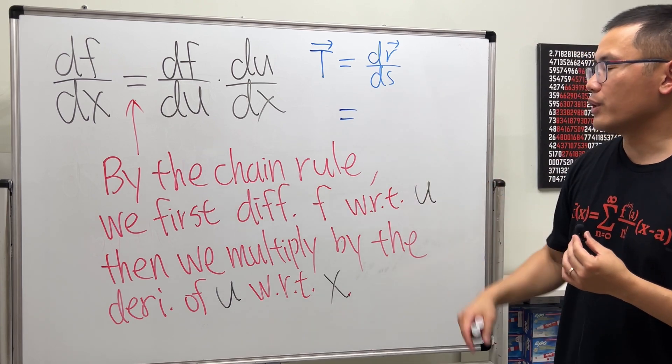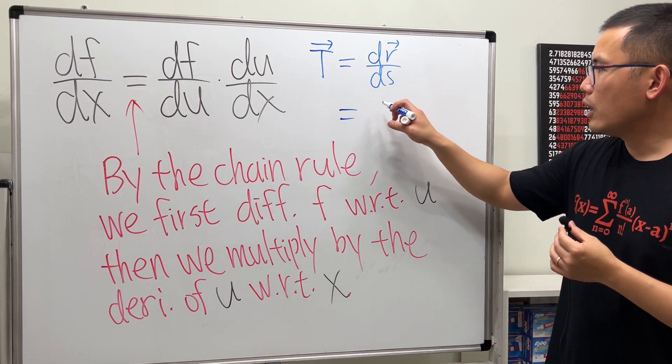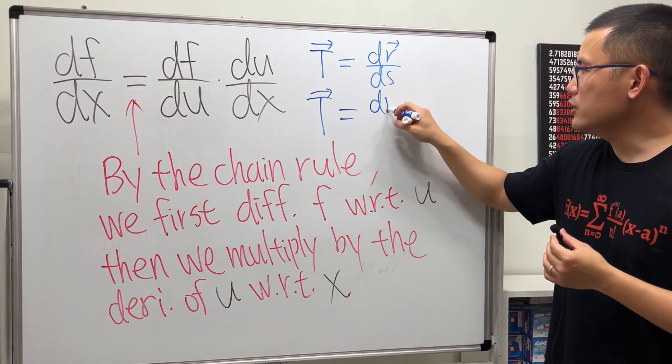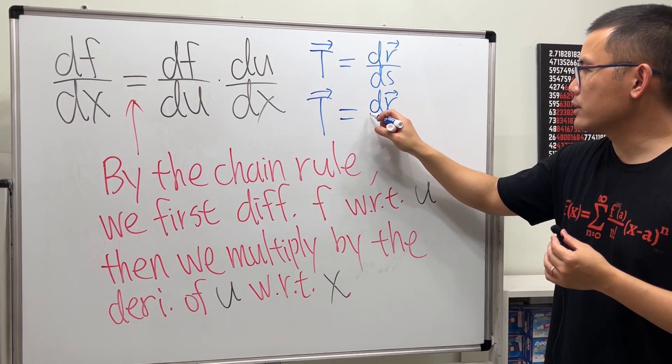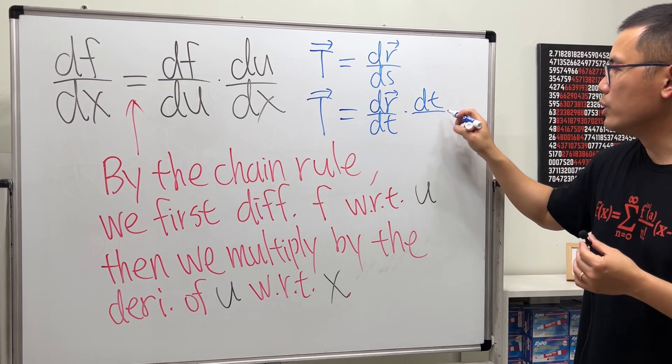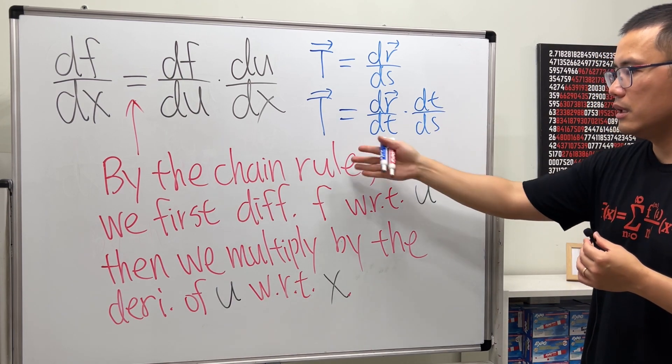differentiate r with respect to t, then we multiply by the derivative of t with respect to s, and again because of the chain rule. Yep, so I think that's it.